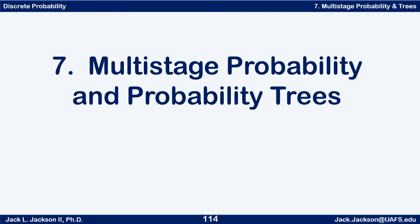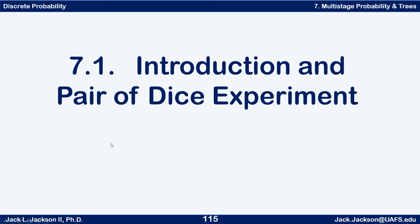Hello, we're back again with some probability exercises and investigations. Up to this point we've been doing some relatively straightforward probabilities, and I want to get into something that may be a little bit more challenging. Some things that maybe turn out to have multi-stage probabilities, and along the way we're going to introduce a technique called probability trees to help us look at that. But before we get into this too much, I want to do a particular experiment and look at rolling a pair of dice.